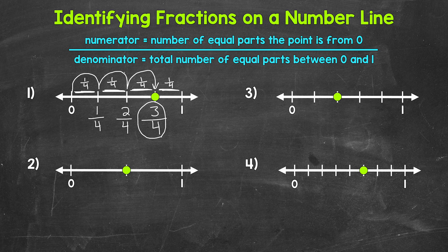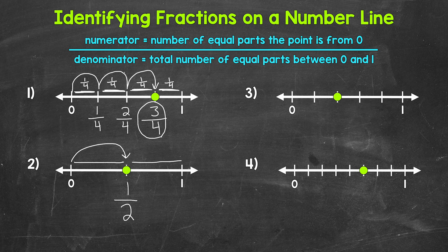Let's move on to number two. We'll start with the denominator, so we need the total number of equal parts between zero and one. We have one equal part and two equal parts, so two is our denominator. Now we count the number of equal parts the point is from zero — one. So one is our numerator. Our fraction for number two is one half, and we can see that the point is halfway in between zero and one, so this makes sense.